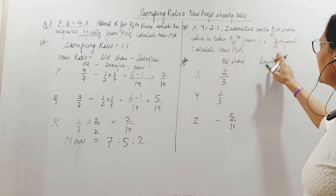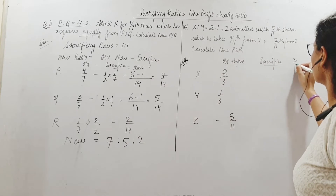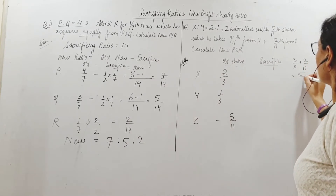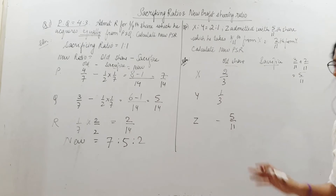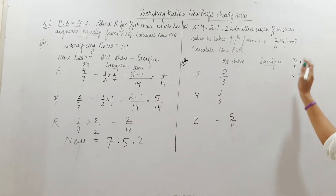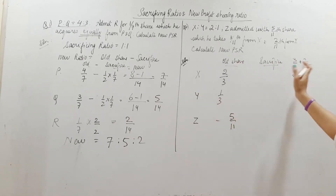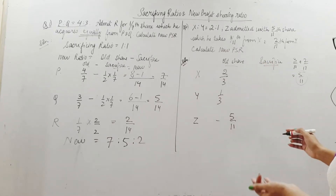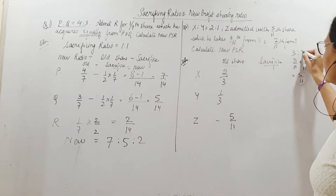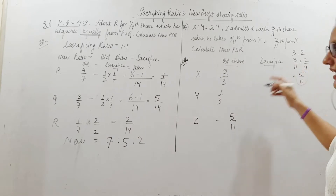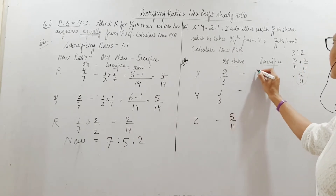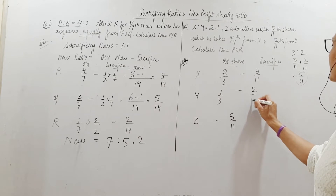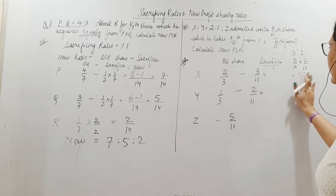3 by 11 plus 2 by 11 comes to 5 by 11 — Z is taking a total of 5/11, acquiring 3/11 from X and 2/11 from Y. Therefore the sacrificing ratio is 3 is to 2. We subtract 3 by 11 from X's share and 2 by 11 from Y's share to find the new ratio.